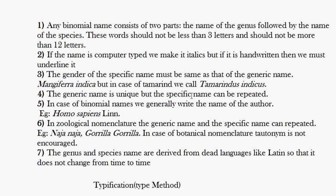The next rule: in binomial names we generally write the name of the author. For example, Homo sapiens Linn., where 'Linn.' indicates Linnaeus, who gave this name for the first time. The author's name is not written in italics. Linnaeus is abbreviated as 'Linn.' — this abbreviation is only done for Linnaeus because he was the father of binomial nomenclature and named a great number of species.